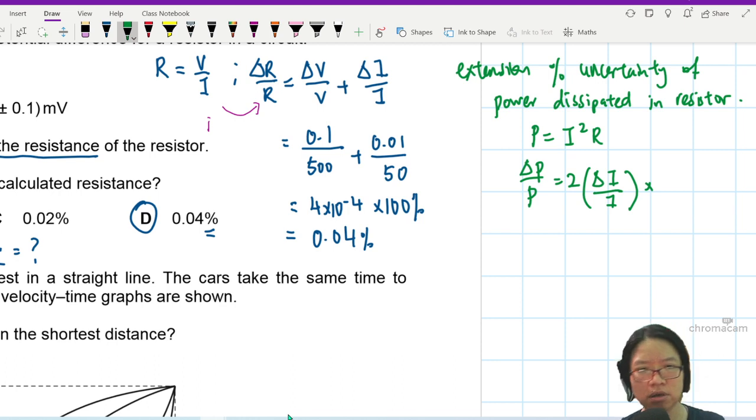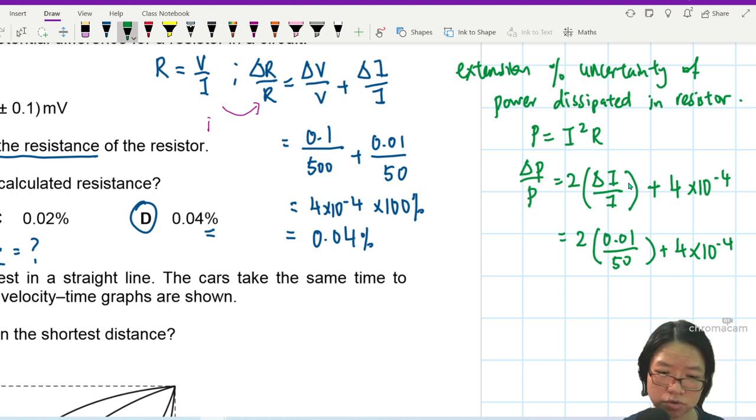Means you got percentage uncertainty in R. This one, this is 0.04%. Or, what did I multiply? Sorry, plus 0.04. I guess I'll plus the 4 times 10 to the power of negative 4. Then everything I multiply 100%. So this one would be 2 times 0.01 over 50 plus 4 times 10 to the power of negative 4. So 0.02 divided by 50. Oh, so this is 8 times 10 to the power of negative 4. Then I'm going to multiply this by 100%.